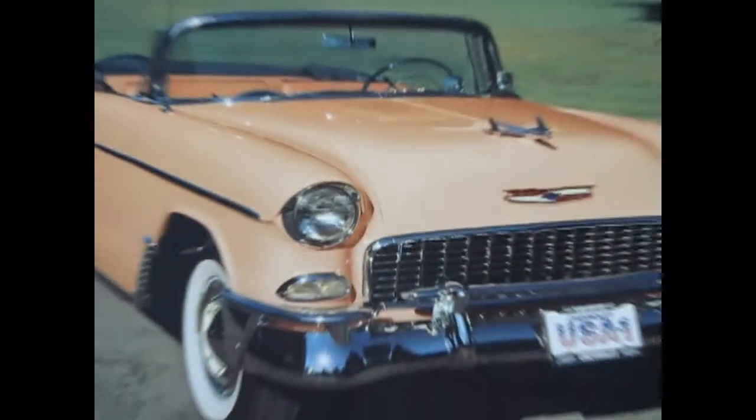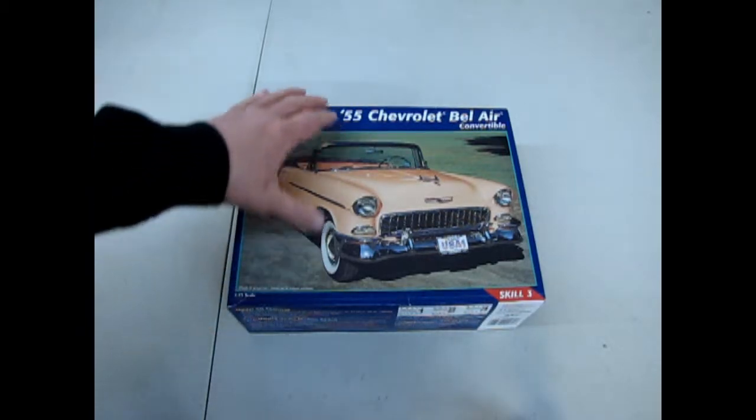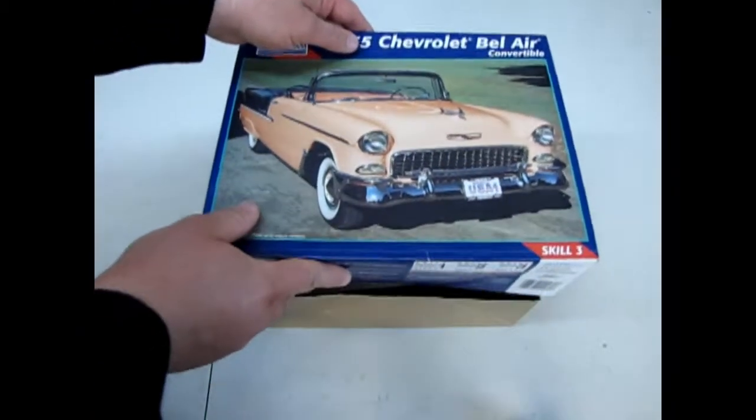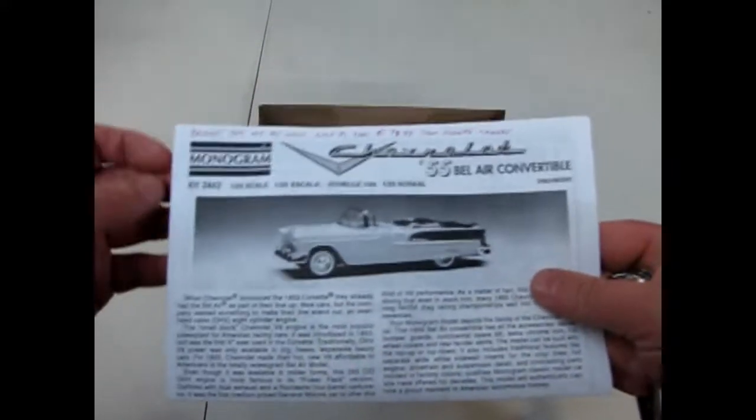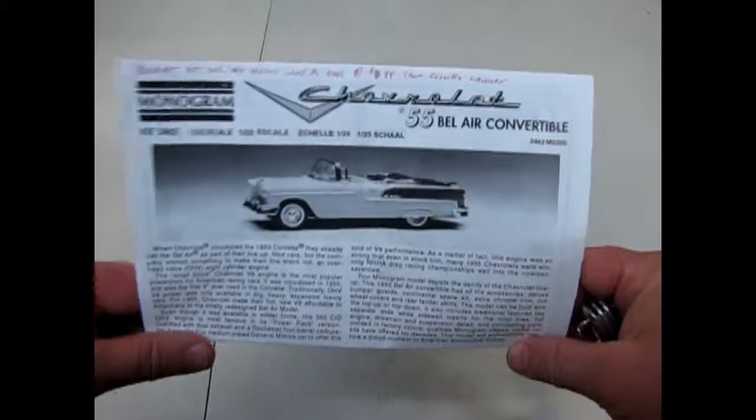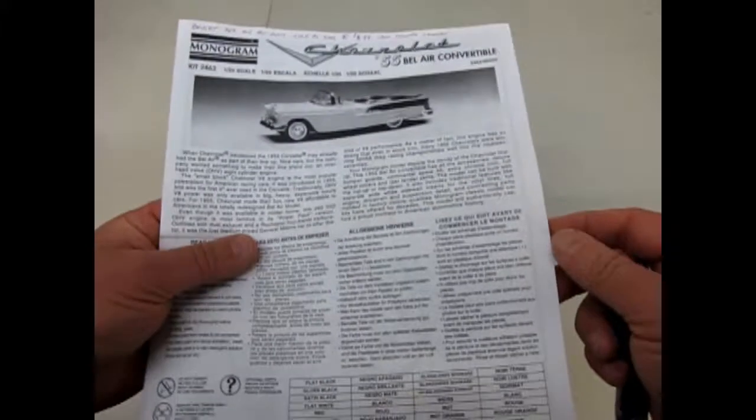Now we take the lid off this Monogram 1955 Chevrolet Bel Air kit skill level 3. This kit is pretty cool as you are about to see and we start with our instruction sheet bought for me by Julie, that's my wife, July 31st 2001 for nine dollars from Zellers in Calgary. I think it's time I built one of these things.